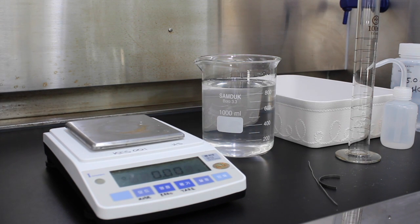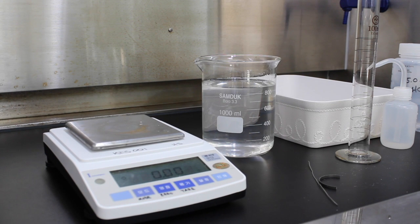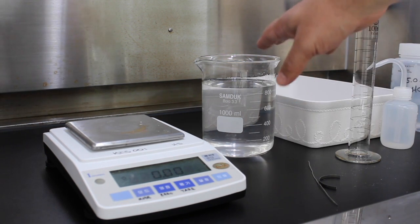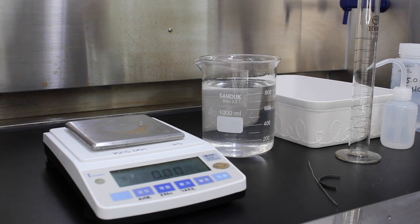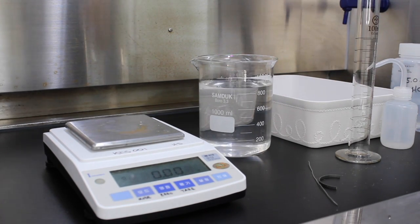So this is our lab where we are going to experimentally determine the value for the ideal gas constant R. We have all of our equipment here. We have our scale, we have a large beaker. I've pre-filled it with some water. About eight or nine hundred milliliters is fine.